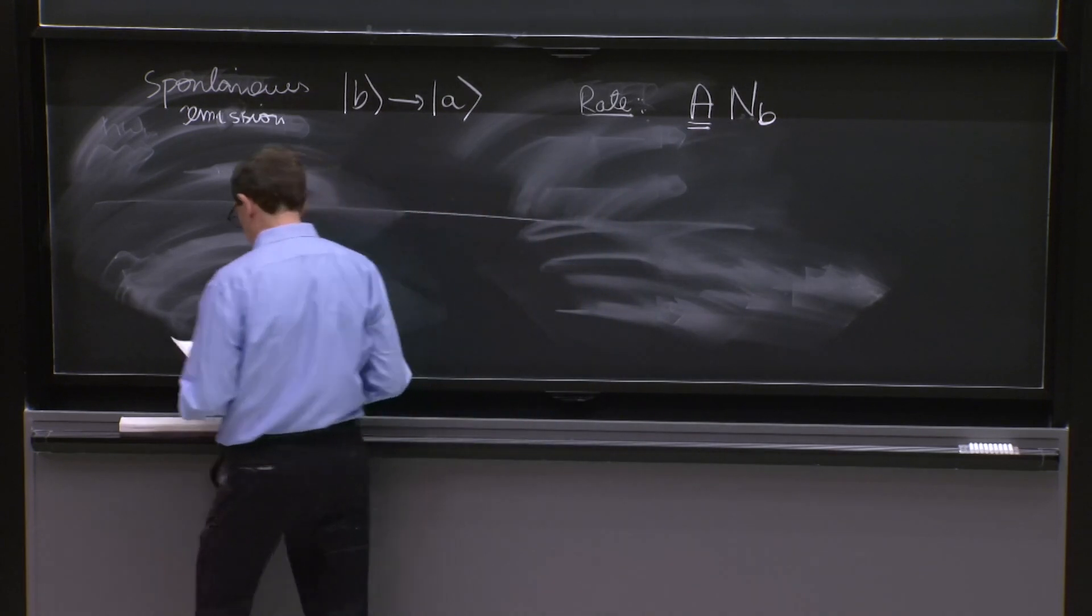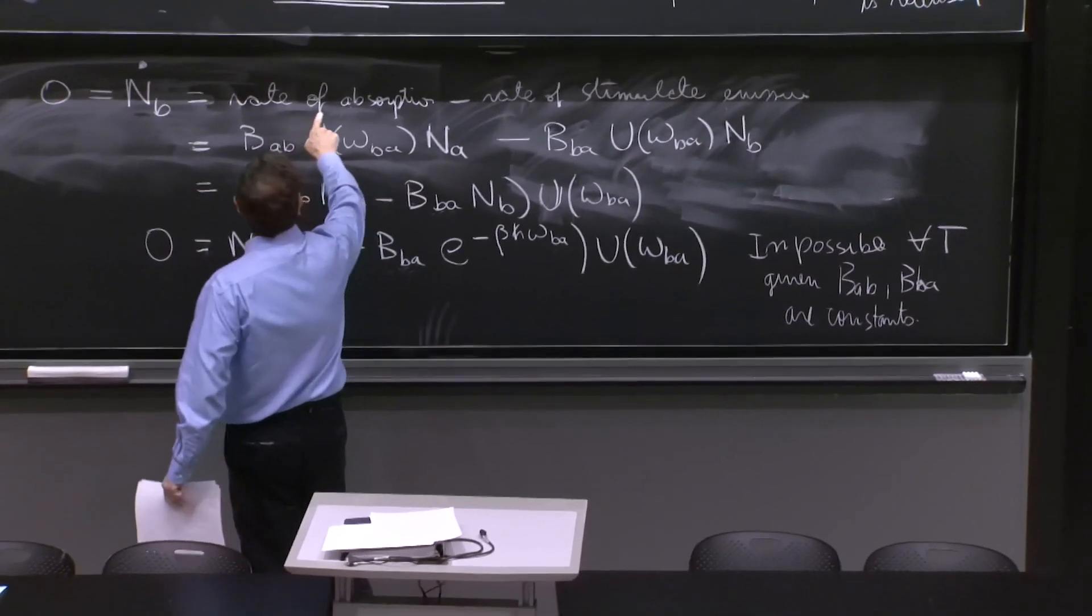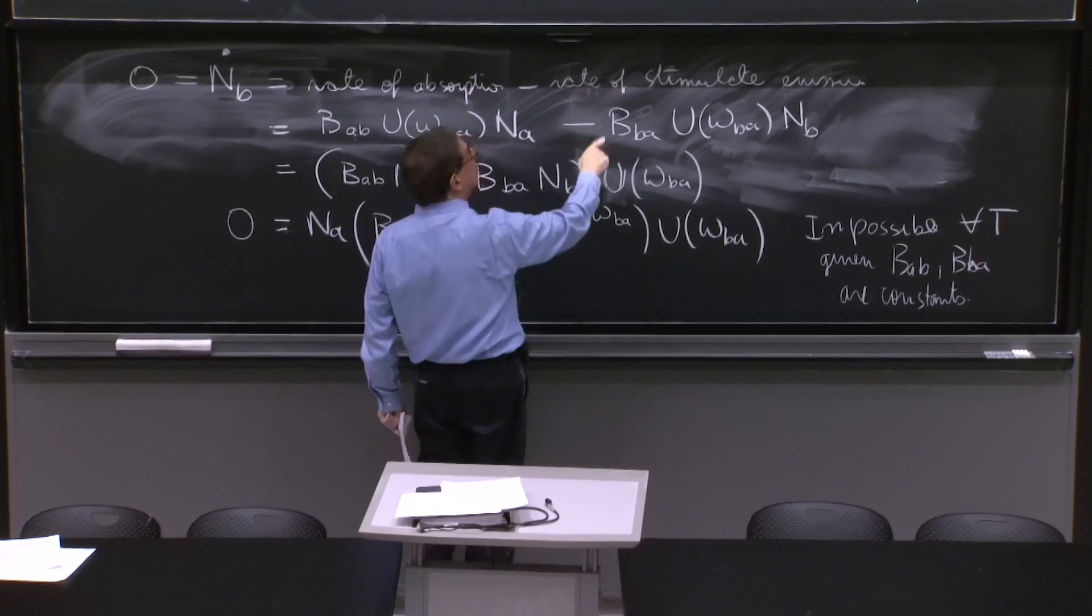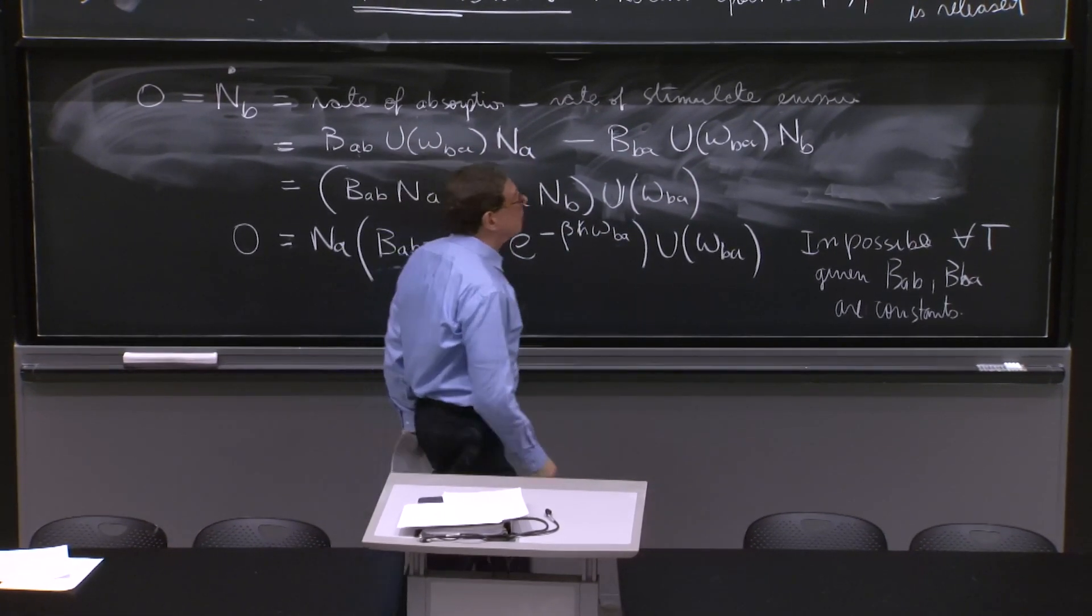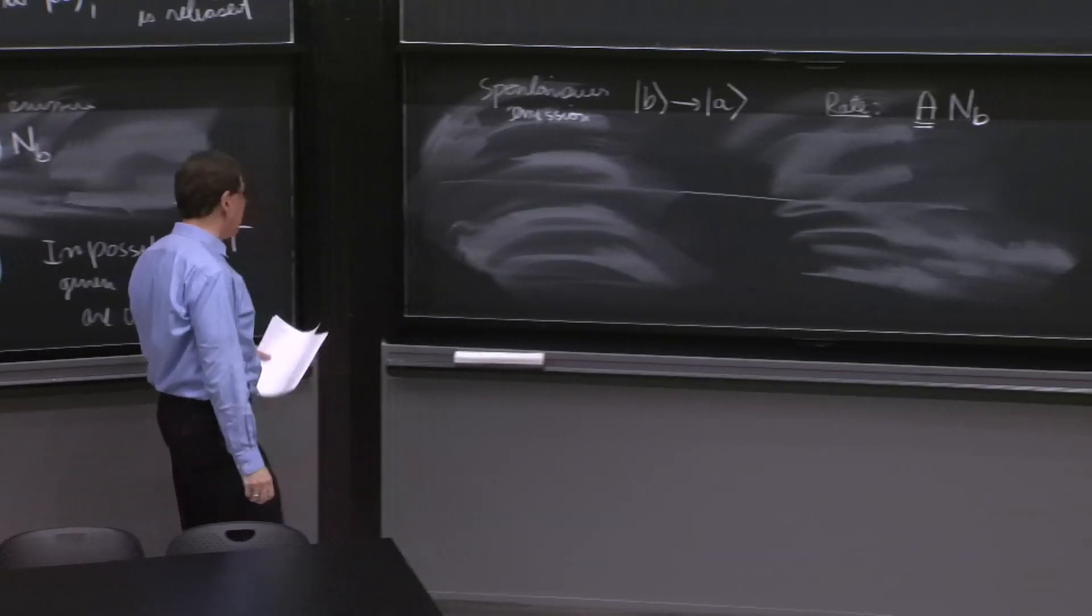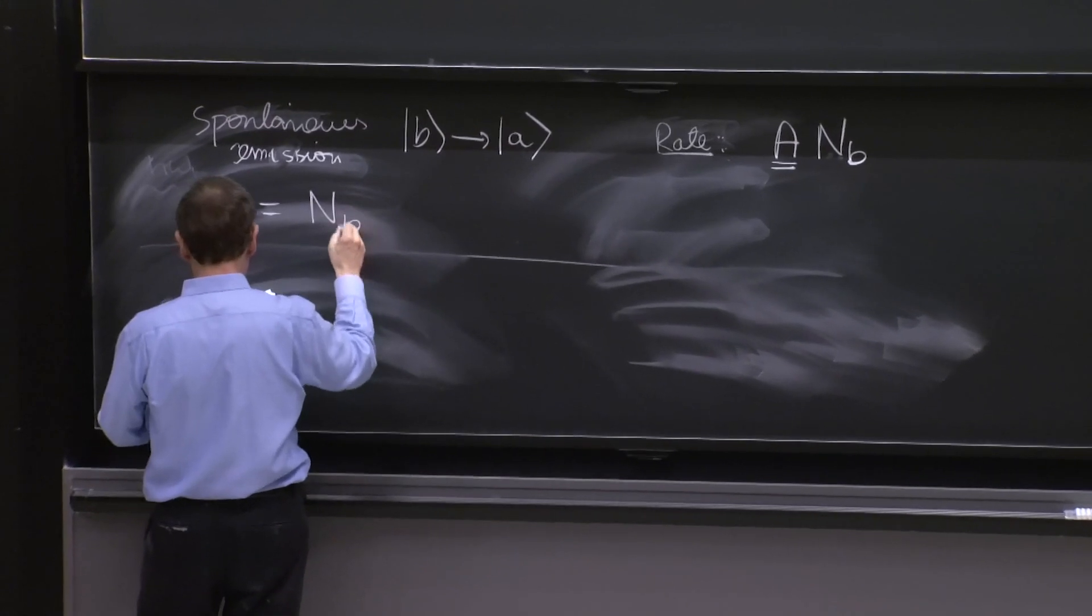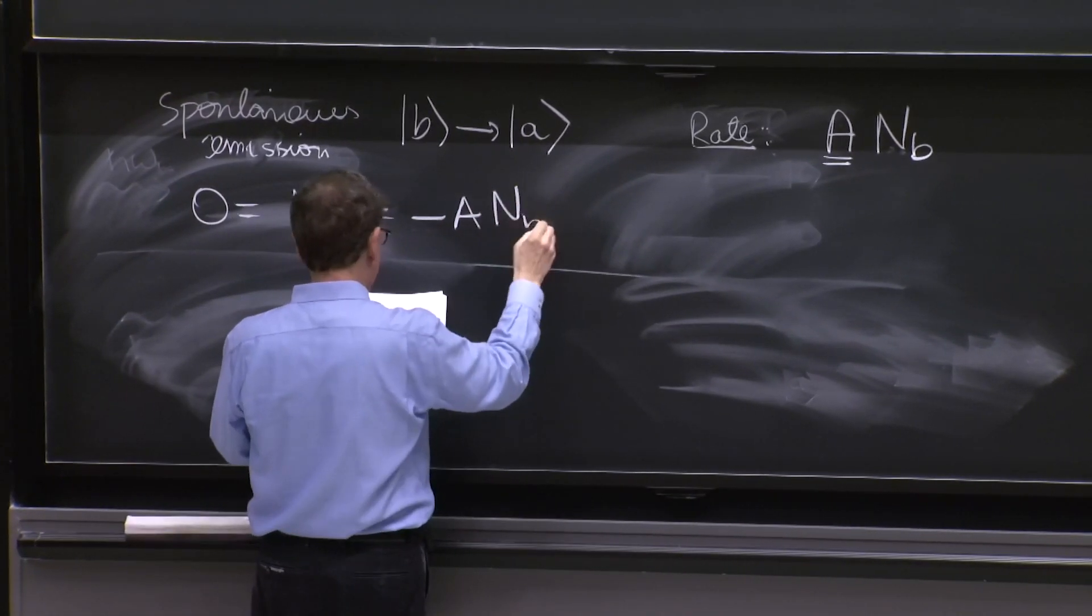So we go back to our equation. Rate of absorption minus rate of stimulated emission minus the rate of spontaneous emission. So I'll write it here. 0 is equal to NB dot equal minus A NB.